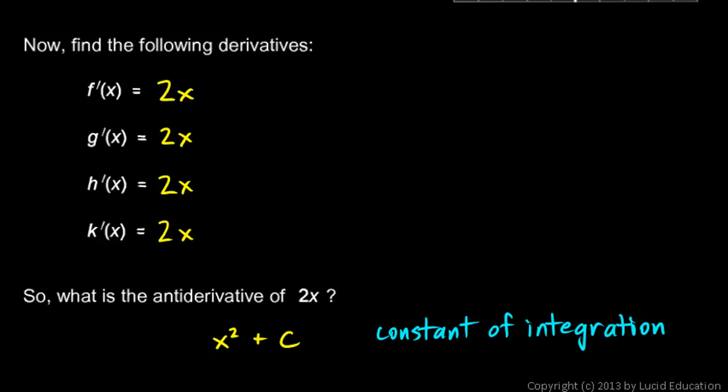You can see why the constant of integration has to appear. That function x² + c is called a general equation for the antiderivative. The above expressions that we had for f, g, h, and k—x², x² + 2, x² + 3, x² - 3—all of those are called particular equations for the antiderivative.